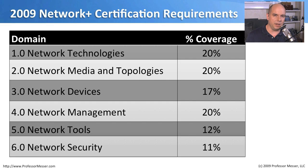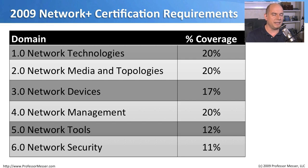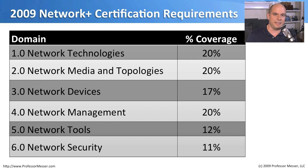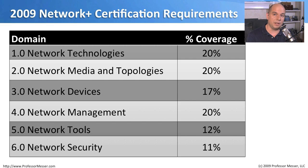There are six topics of study — domains — on the Network Plus certification. The first is Network Technologies, which is 20% of the exam. Then Network Media and Topologies, Network Devices, Network Management, Network Tools, and Network Security round out all six domains. They have different percentage coverages. Network Security is only 11% of the exam. That doesn't mean you should ignore it, but keep in mind you may want to study more on Network Technologies and Network Media and Topologies, since both consist of 20% of the exam coverage.